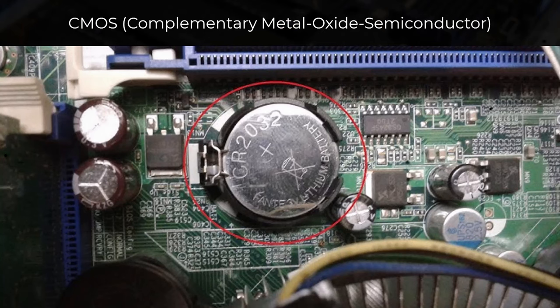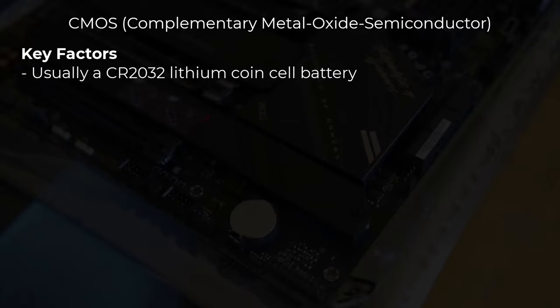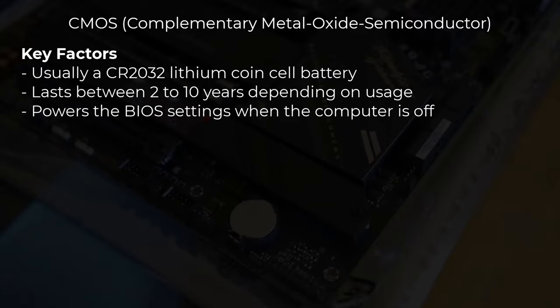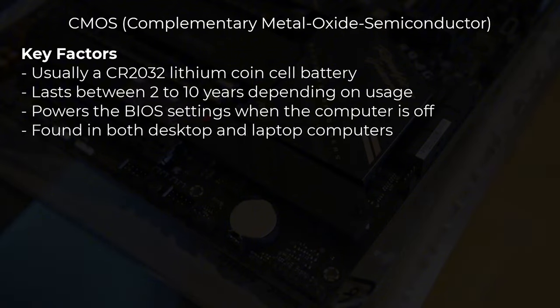Here are some key facts about the CMOS battery. It is usually a CR2032 lithium coin cell battery that lasts between 2 to 10 years depending on usage. It powers the BIOS settings when the computer is off, and it is found in both desktop and laptop computers.